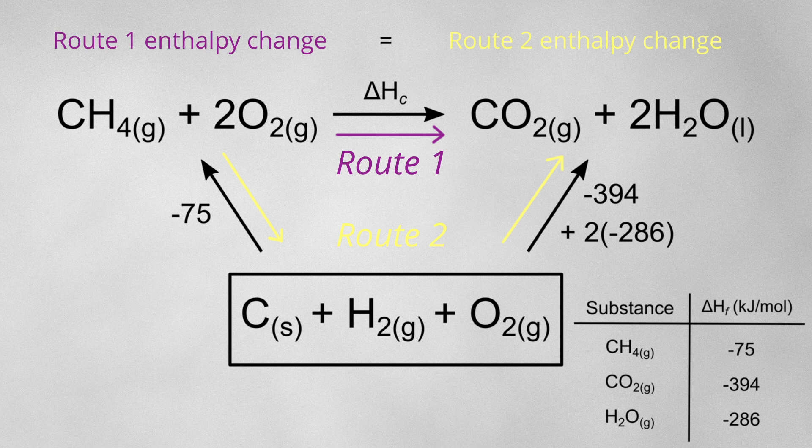The problem with this method is that since you're going against the direction of this arrow, you'll need to flip the signs of the enthalpies attached to it. And this is where a lot of mistakes can be made, especially when there are lots of enthalpies involved.